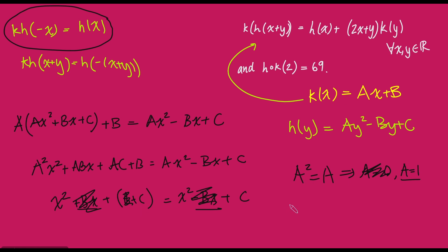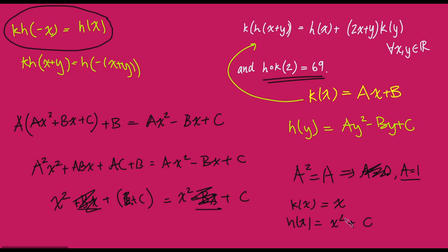Putting it all together: k of x equals x (since a equals 1 and b equals 0), and h of x equals x squared plus c. Using the condition h composed with k of 2 equals 69: k of 2 equals 2, then h of 2 equals 4 plus c equals 69, so c equals 65. Therefore k of x equals x and h of x equals x squared plus 65.